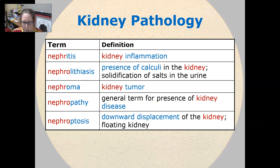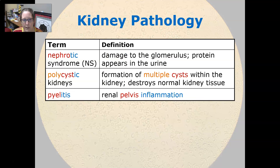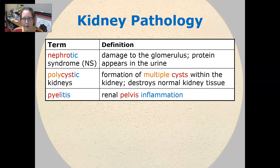Nephroptosis is a downward displacement of the kidney — it's a floating kidney. Nephrotic syndrome is damage to the glomerulus where a large amount of protein appears in the urine, far more than in any other condition.